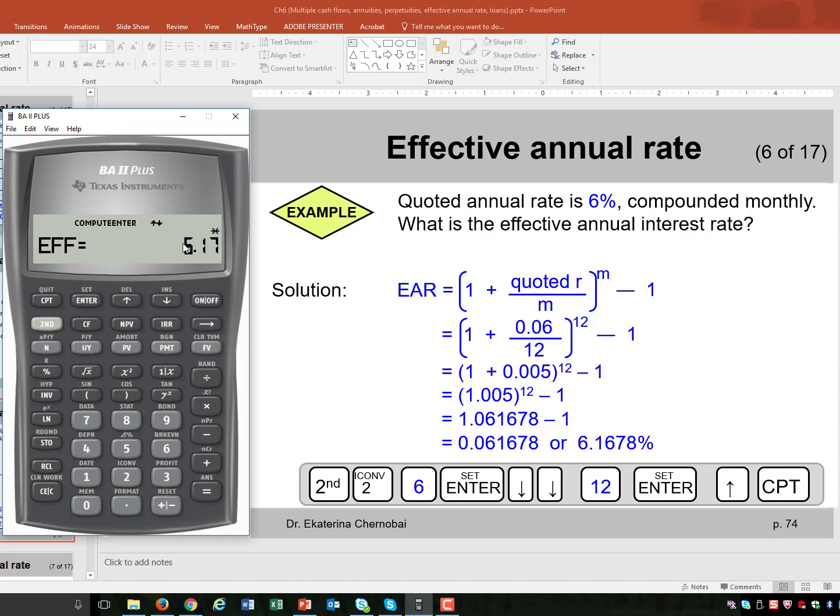6.17% per year, right? It's actually rounded to the second decimal place. The more accurate percentage would be like on my slide, 6.1678%.